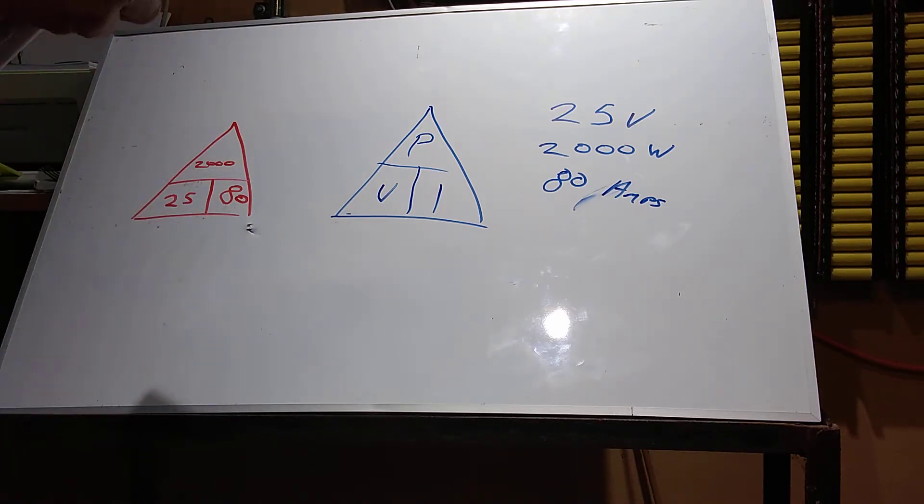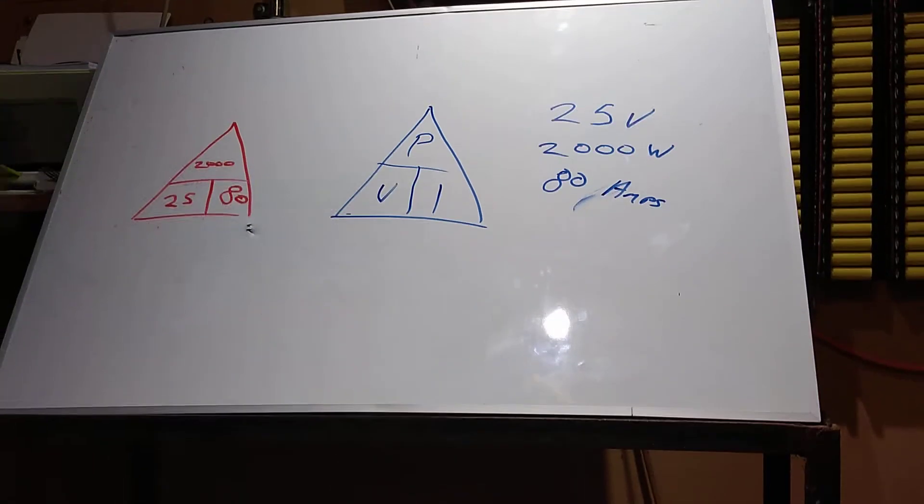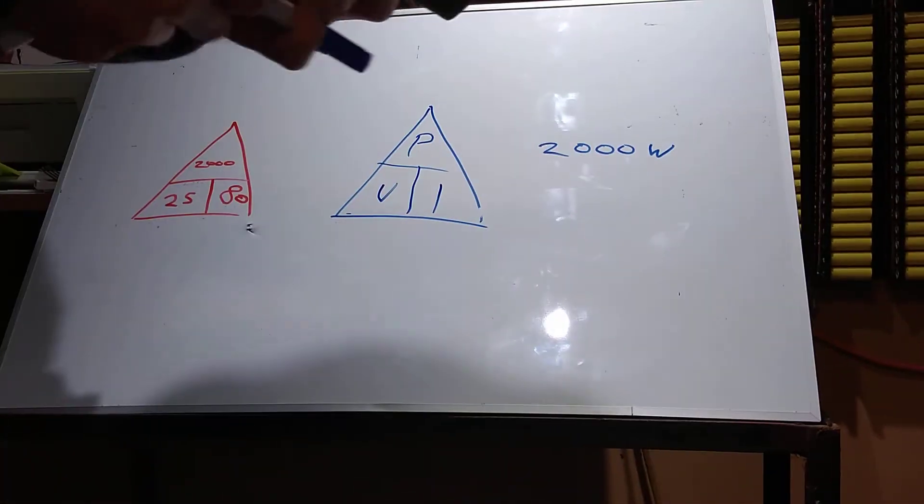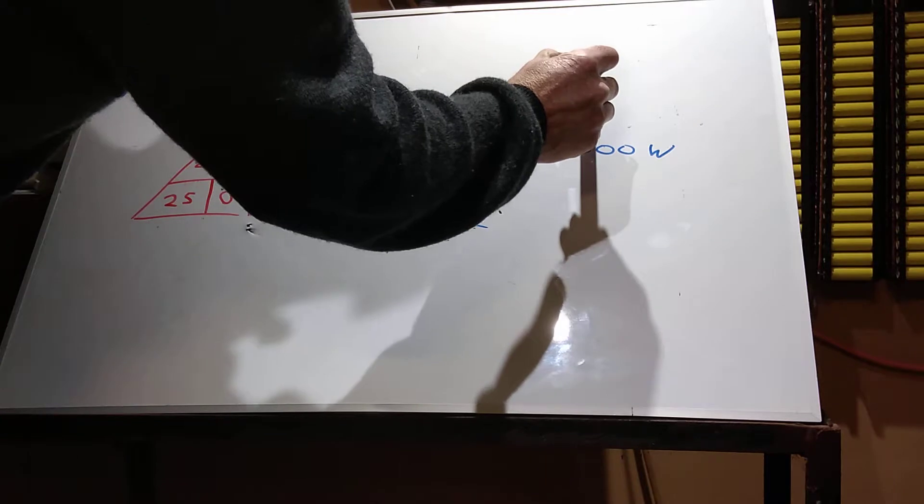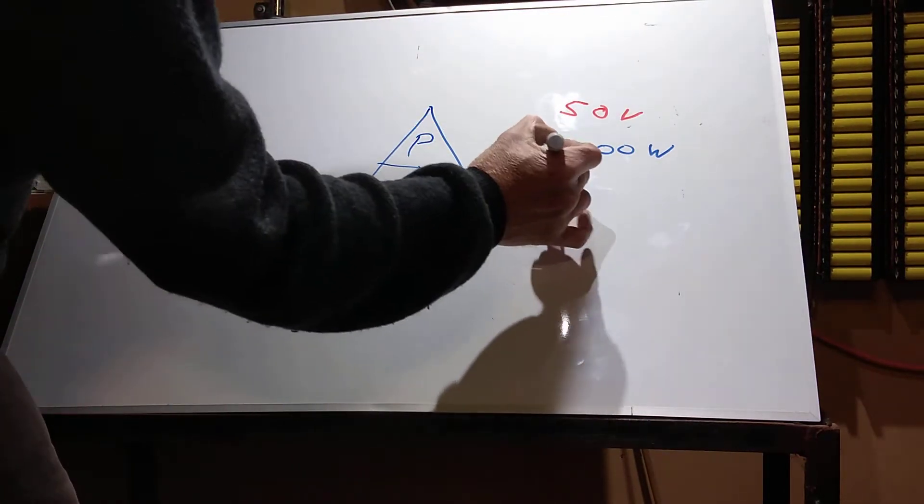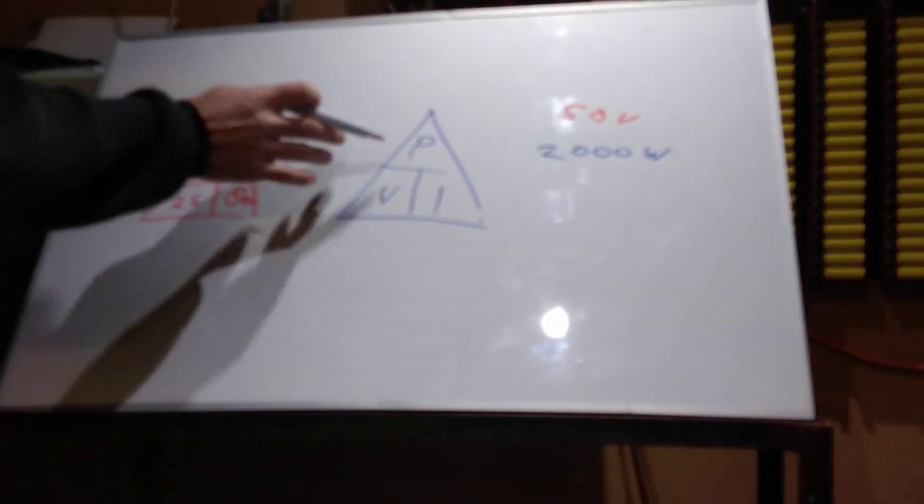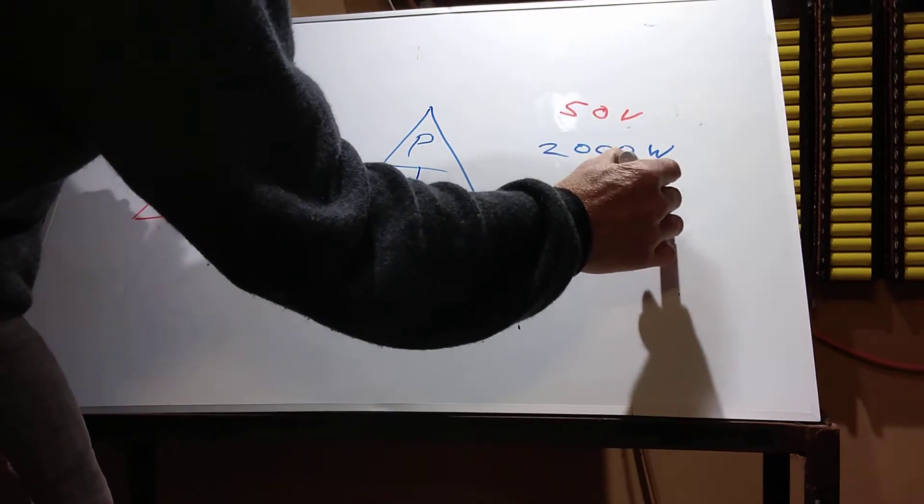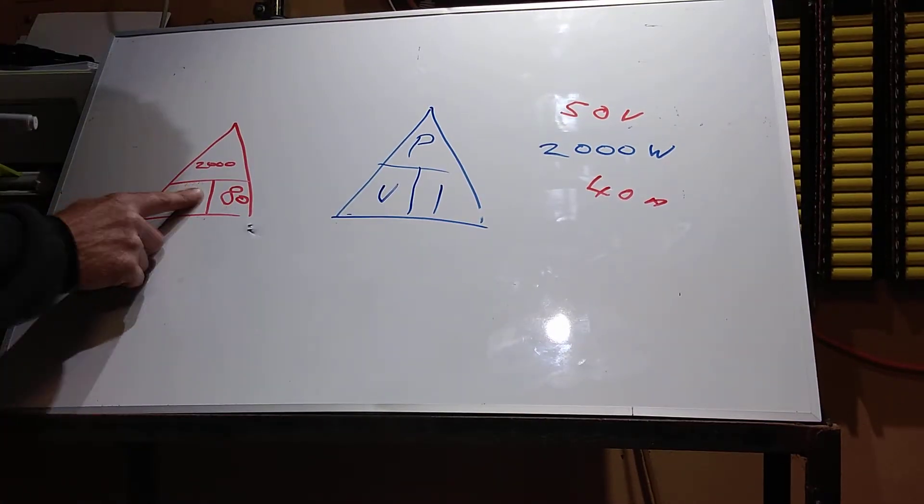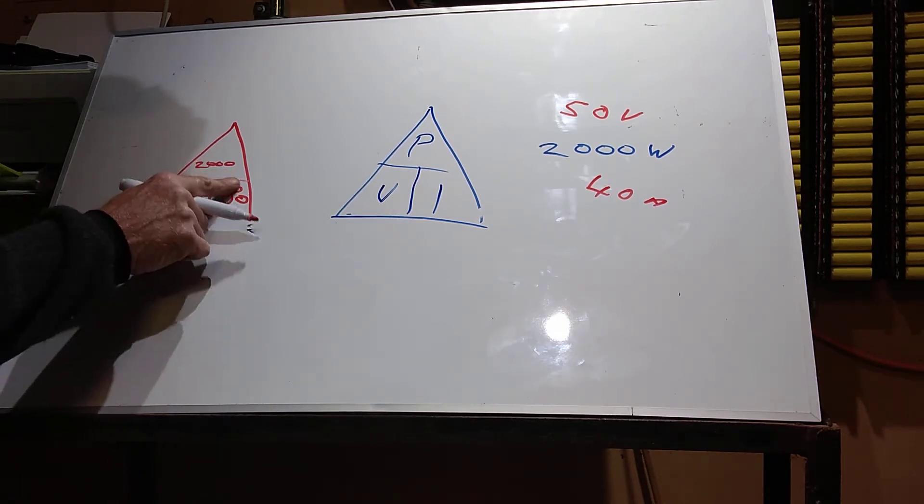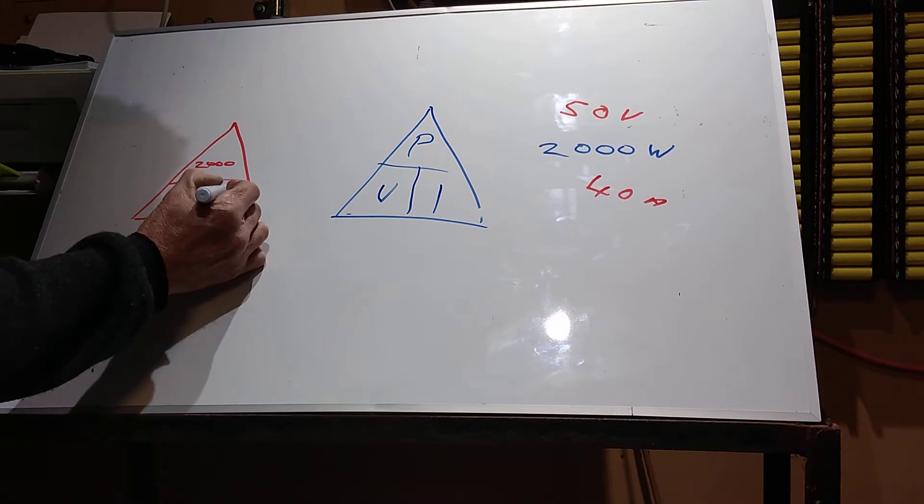So people want to know why we're going to this 48 volt system. Simple. It's efficient and it reduces the current. If you think about, if it was 48 volts, let's say 50 volts round figures. Then you go 2,000 watts. So 2,000 divided by 50 equals 40 amps. So here that would be 50 volts and 40 amps.